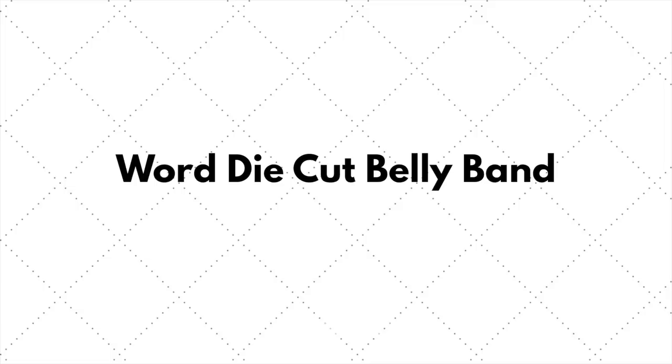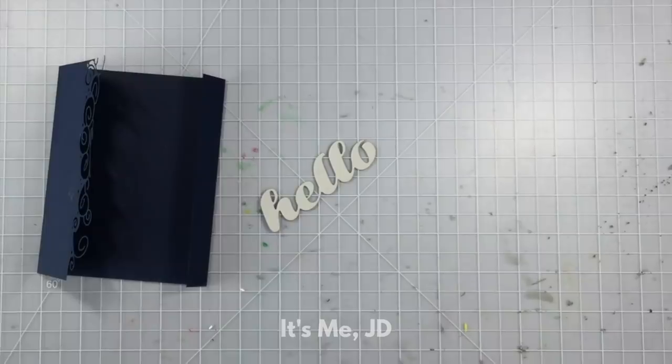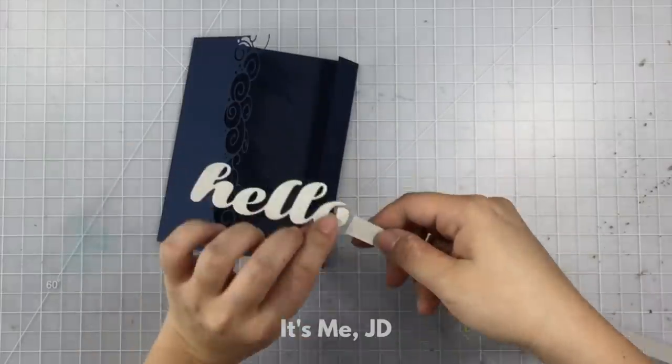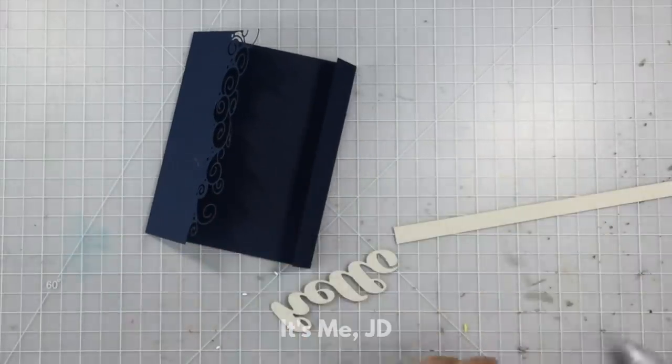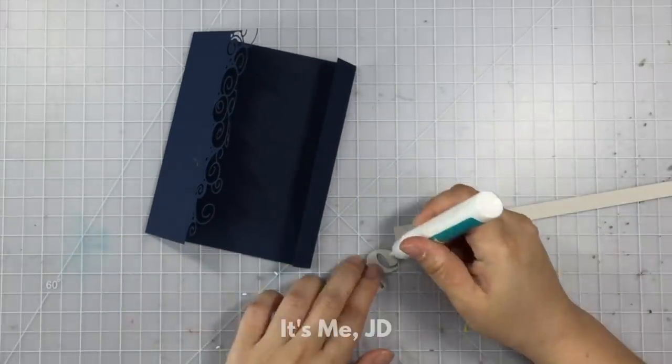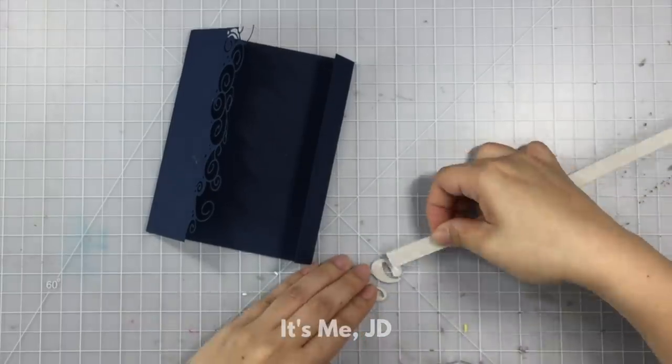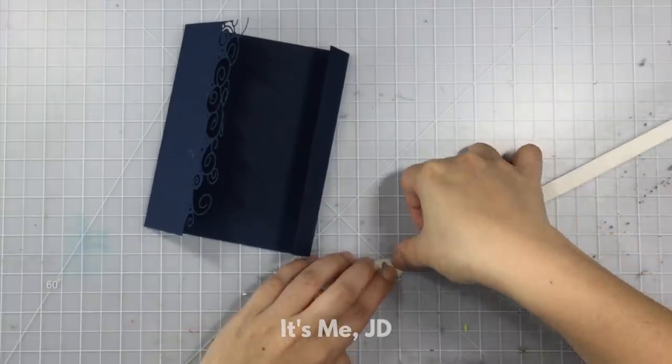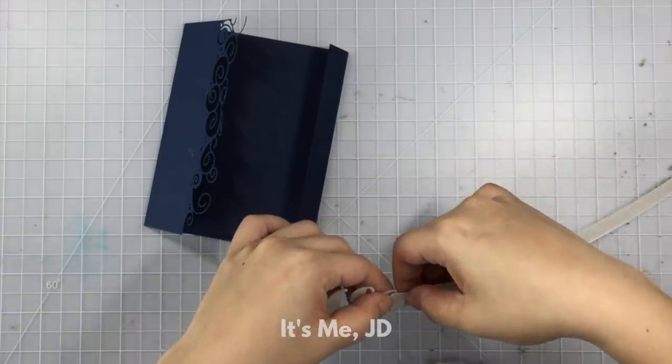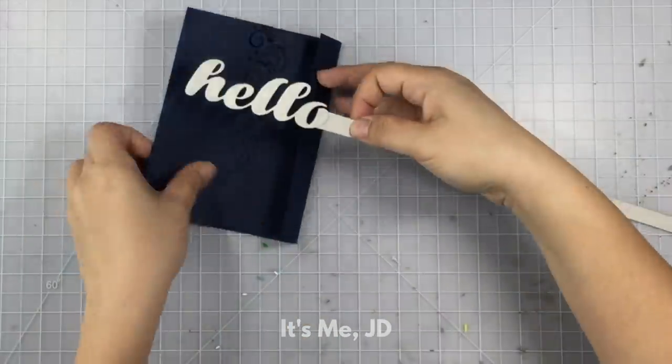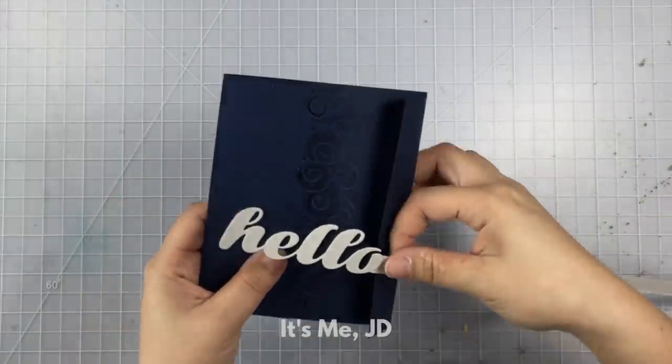A fun way to get more use out of your word dies is to integrate them into your belly band. Instead of placing them right on top of your belly band you can actually use it as a part of your belly band so it looks like one continuous strip. For this technique it's best to use a thicker word die, something like this here that has a little bit thicker letters and you can attach a sturdier strip of cardstock to.